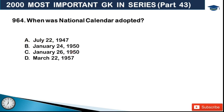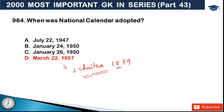Next: when was the national calendar adopted? Options: July 22, 1947; January 24, 1950; January 26, 1950; and March 22, 1957. The answer is option D, March 22, 1957. In Saka calendar terms, it was 1 Chaitra, 1879. When converted to the Gregorian calendar, the date is March 22, 1957 - that is when it was adopted.